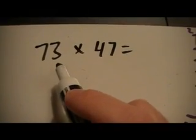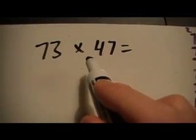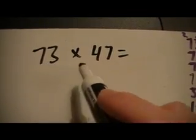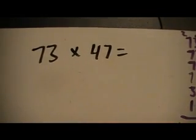Most students by 4th grade understand that multiplication, 73 times 47, is like saying 73 groups of 47 or 47 groups of 73. Either way, I'm going to get the same answer.